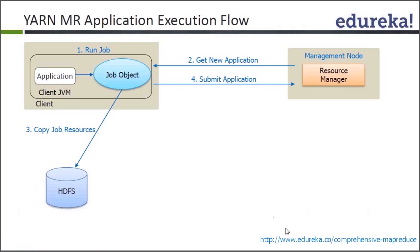Step three: the client copies the job resources to HDFS. Remember, we said moving the code to the data — the code has to go to the data. Then in step four, it submits the code to the resource manager. These are the first four steps. Whenever you say 'Hadoop jar, the name of the jar file, the name of the application' and press enter, the job goes to the management node for the job ID, gets copied to HDFS, and is submitted to the resource manager.